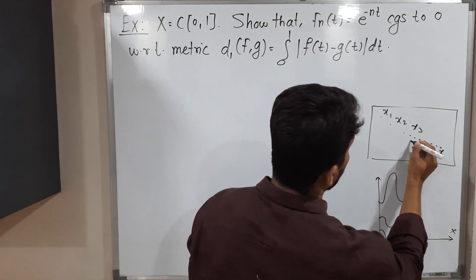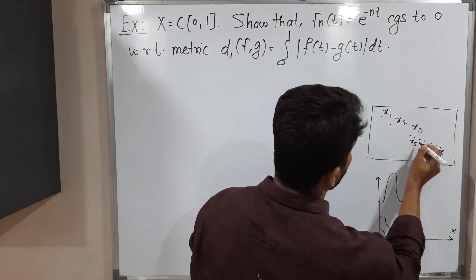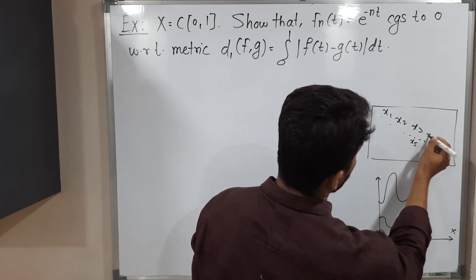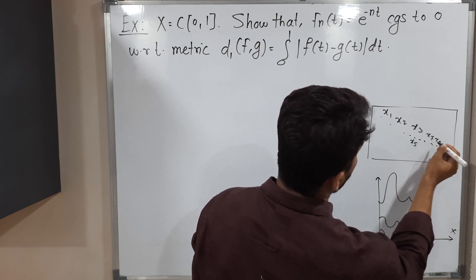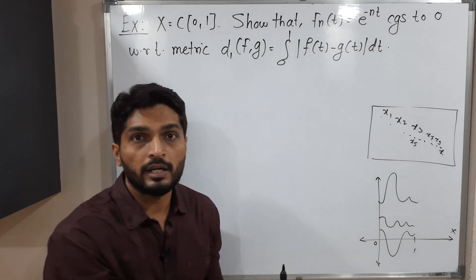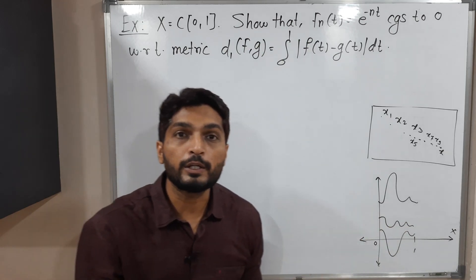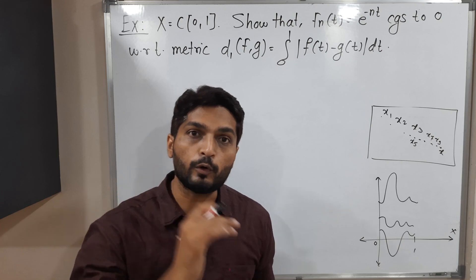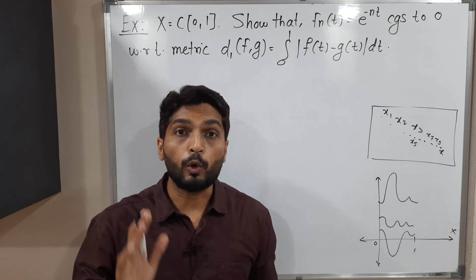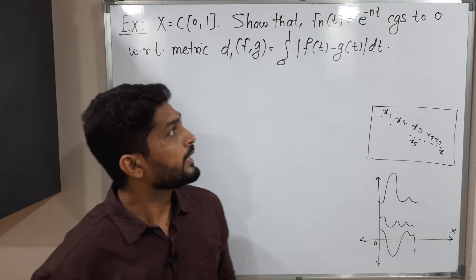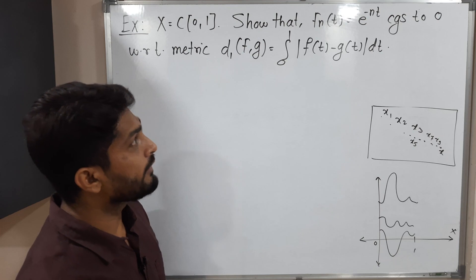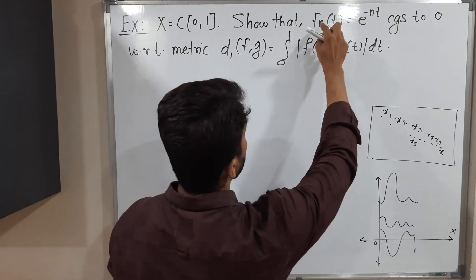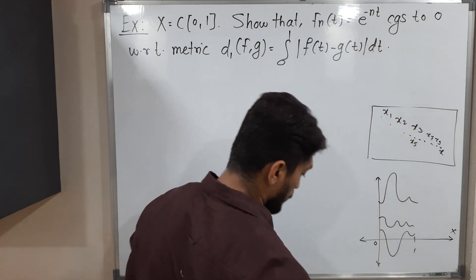That means the distance between each point and x is moving towards zero. Suppose if you take x5 here, distance between x5 and x, x7 and x, x9 and x — the distance is reducing and it is moving towards zero. Then we say the sequence is convergent. Same logic I am going to use here. Our main focus is on the distance between fn and zero.